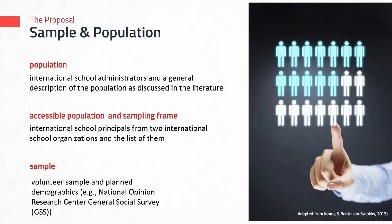Hopefully now you have a general idea of what's included in a research proposal in terms of population, accessible population, sampling frame, and sample. One useful note: when creating demographic survey questions to collect data from your sample, I find the National Opinion Research Center General Social Survey helpful. This survey collects demographic and other useful information, and I often find it helpful when wording demographic questions for a demographic survey I'm putting together for research.